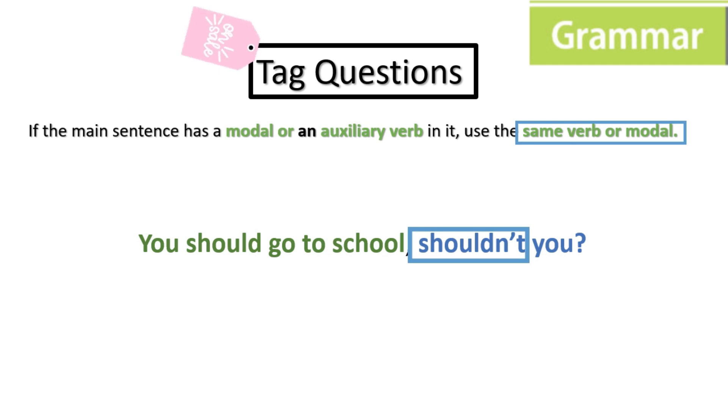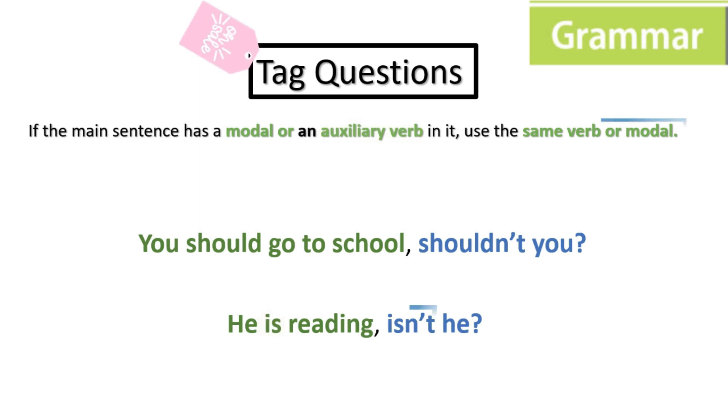Also, for example, here we have, he is reading, isn't he? Is is an auxiliary verb. Isn't he, isn't has to be used because it's the same auxiliary verb used in a statement.